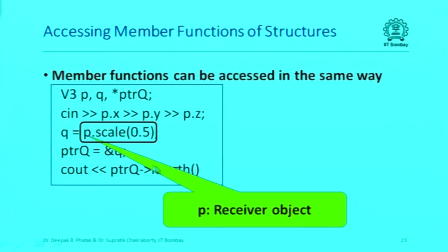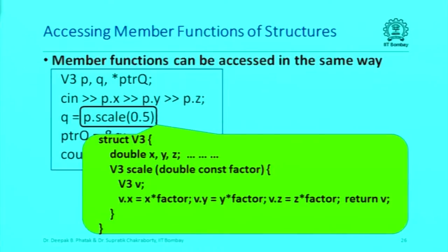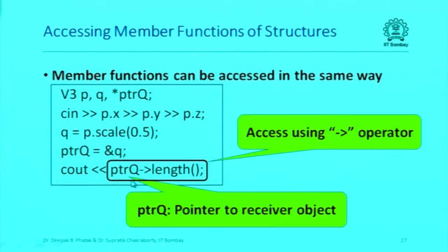When you call a member function, it is in the context of a specific object of that structure type. That object — the one whose data members you have free access to — is called the receiver object. So here, scale is the member function called on the receiver object P with the parameter 0.5. And similarly, we can use the arrow operator: a pointer to the receiver object accesses the member function through the arrow operator. Member functions can be accessed just like data members, and you can pass parameters to them and have local variables in them.